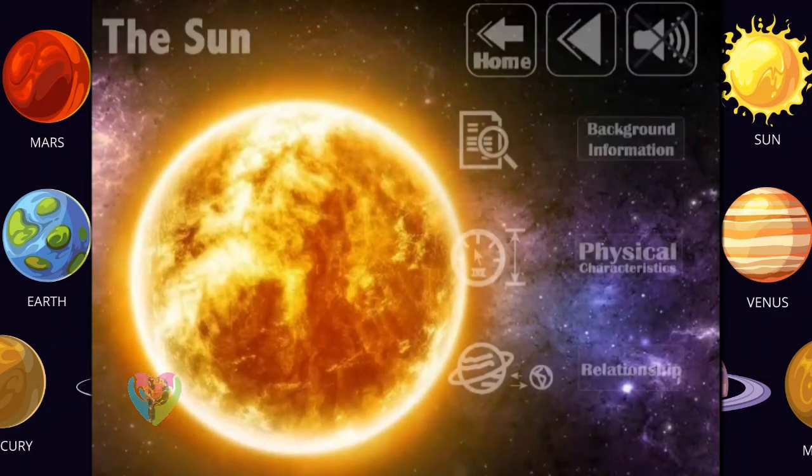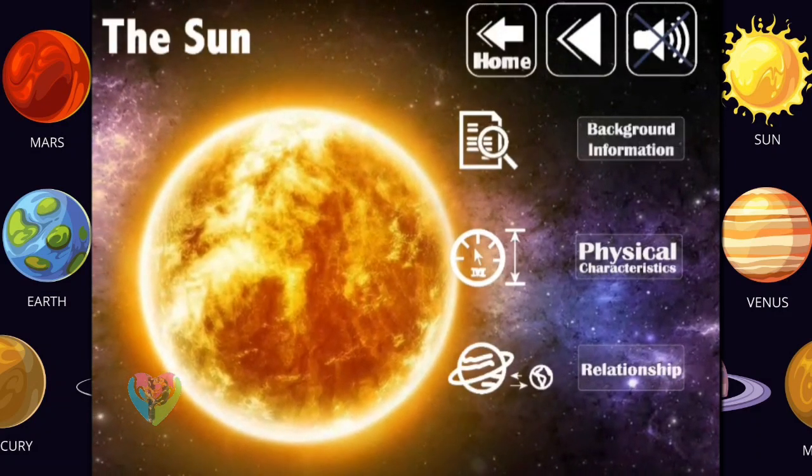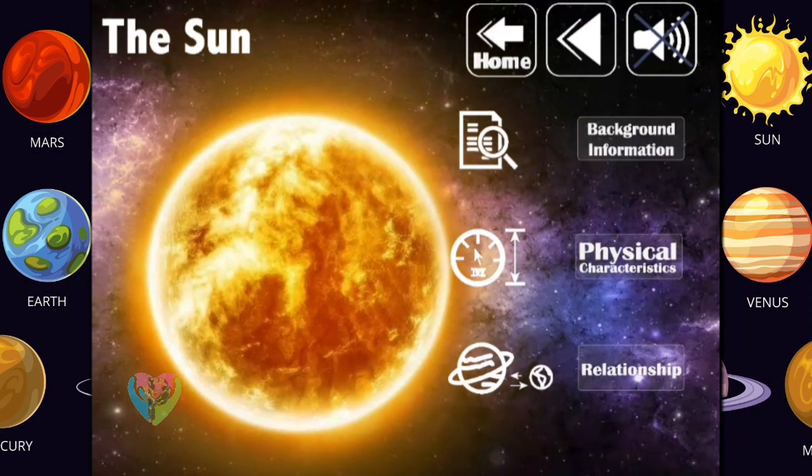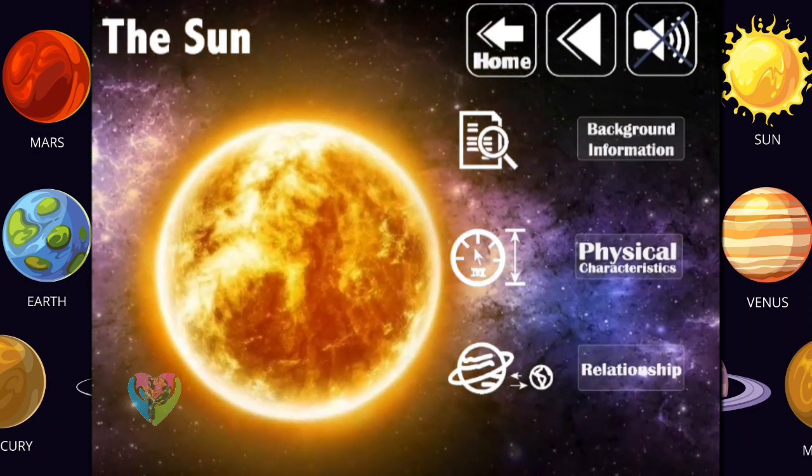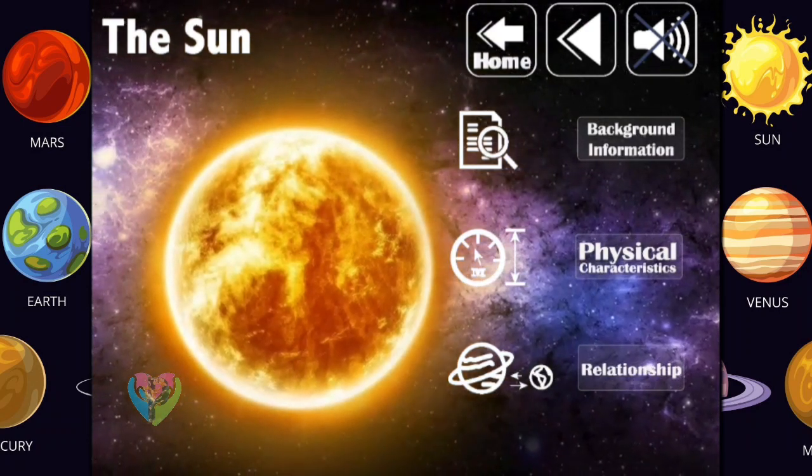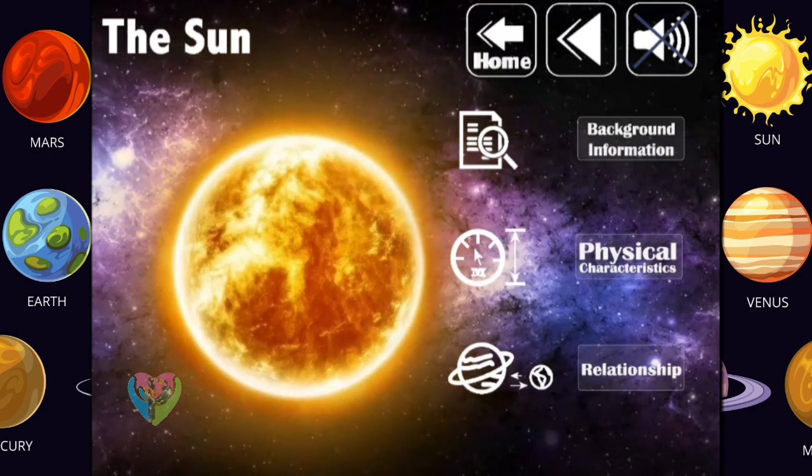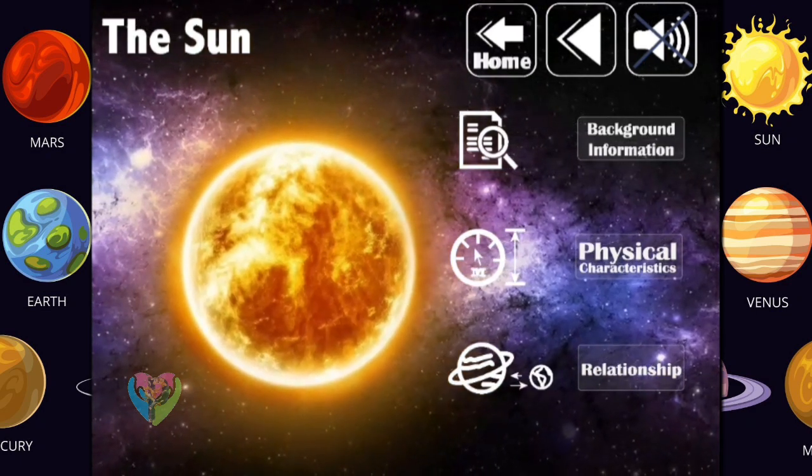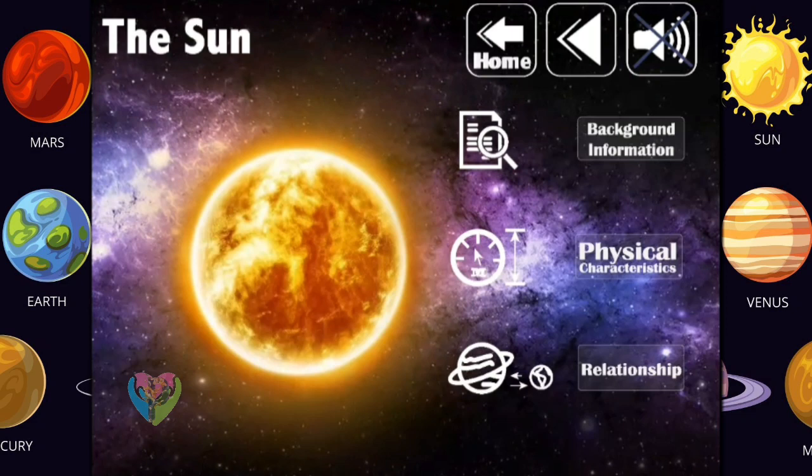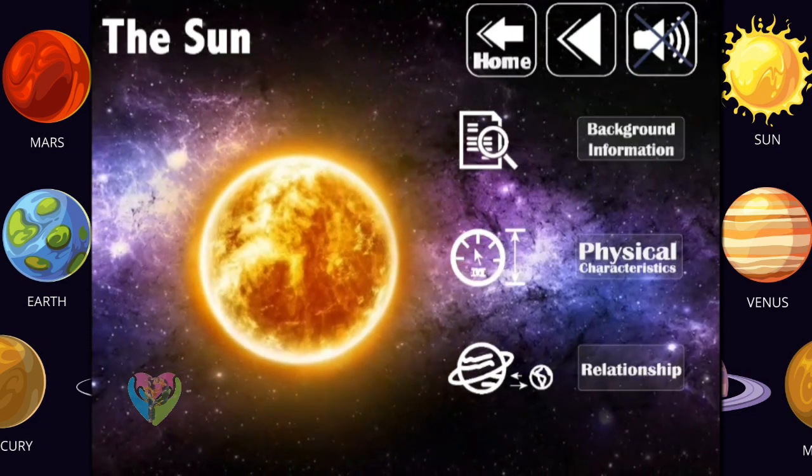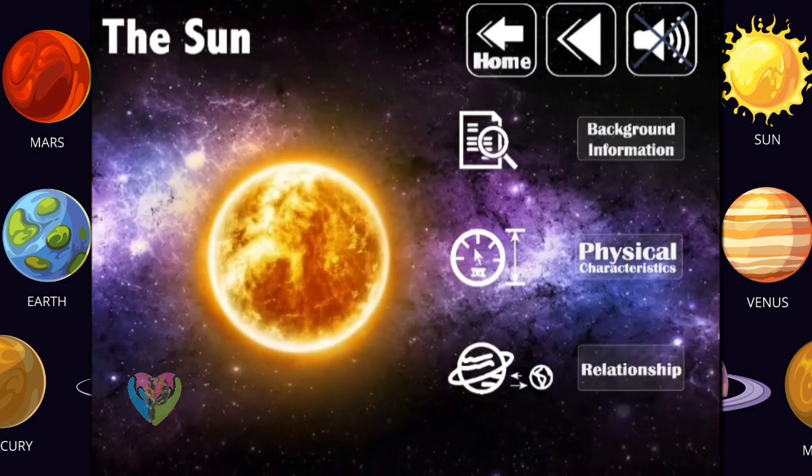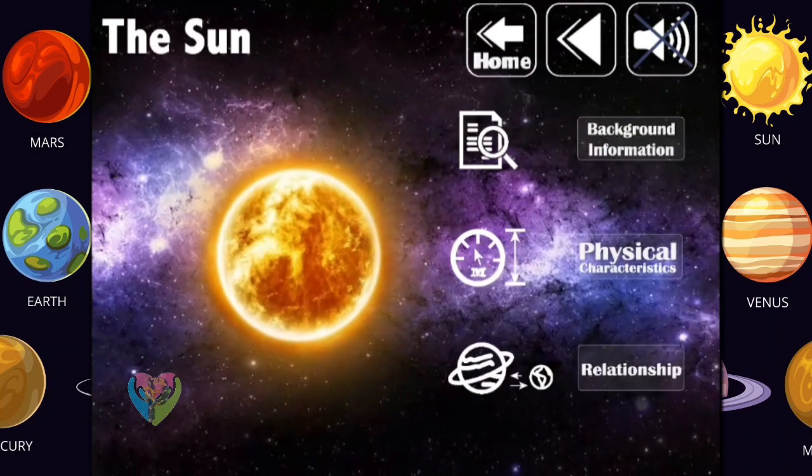Please select on the topic Background Information History, Discovery, and Mythology Physical Characteristics Size, Mass, Natural Satellites, and Composition The Relationship of the Solar System refers to the Orbital Distance Mass and Size Comparison.